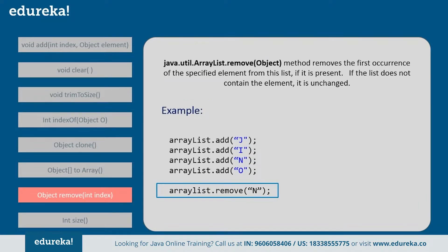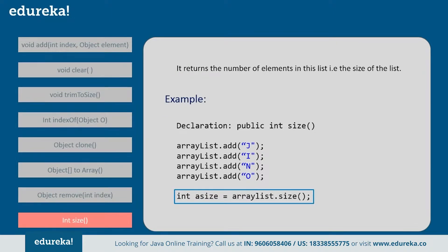For example, if you want to remove 'n' from the list, it removes the first occurrence of 'n'. If there is another occurrence of 'n', it won't remove that one. Next, size(): this returns the number of elements in the list — that is, the size of the list. Suppose we have added four elements, then it returns the size of the ArrayList as four. Now let's demonstrate all these methods and see how they work.